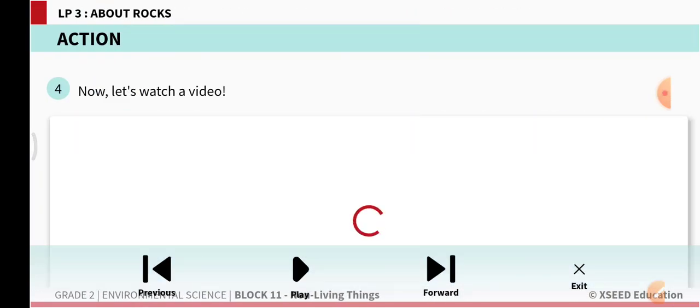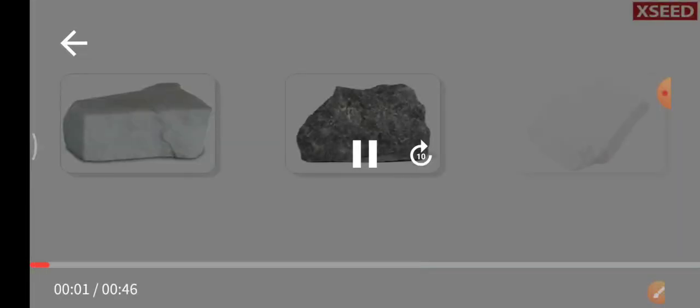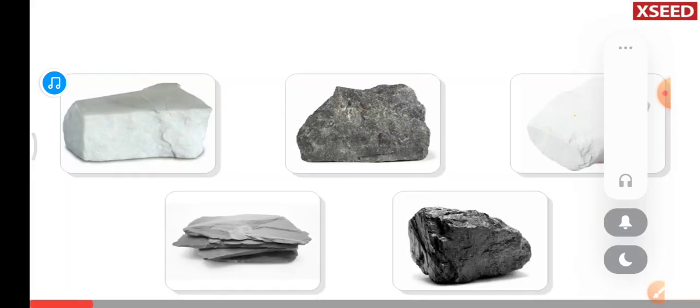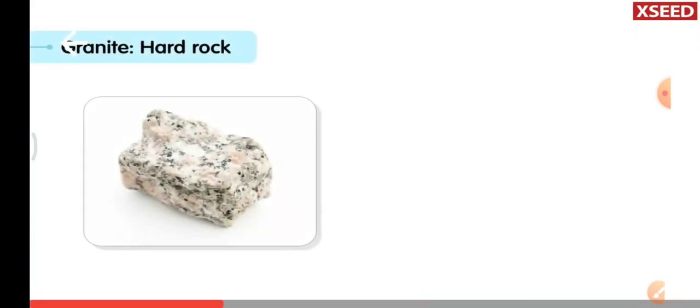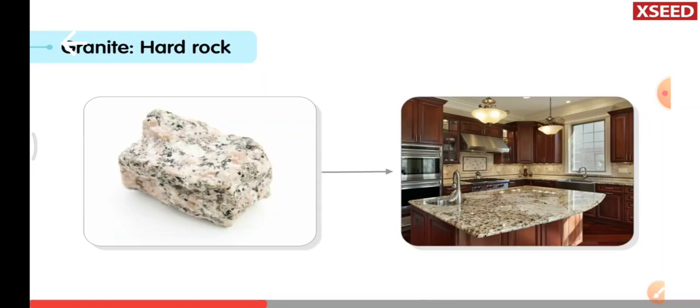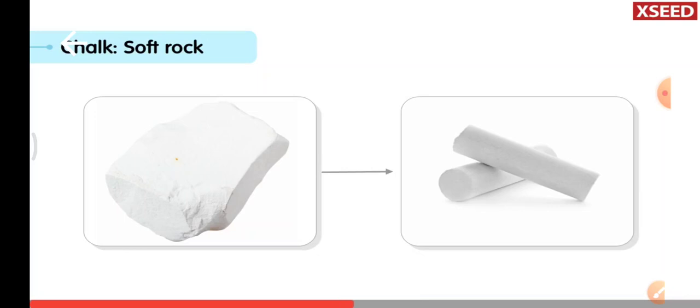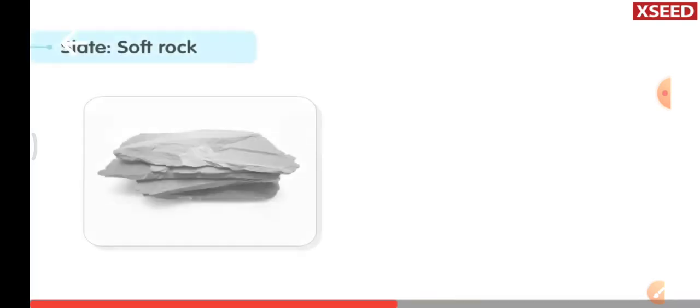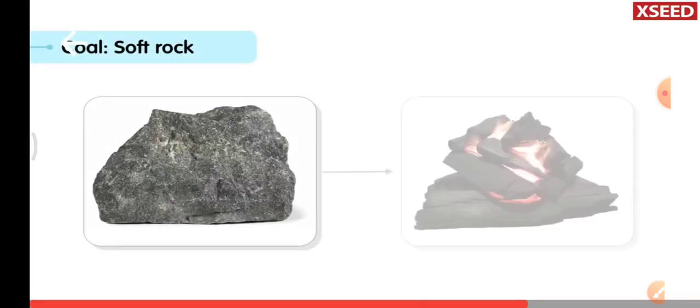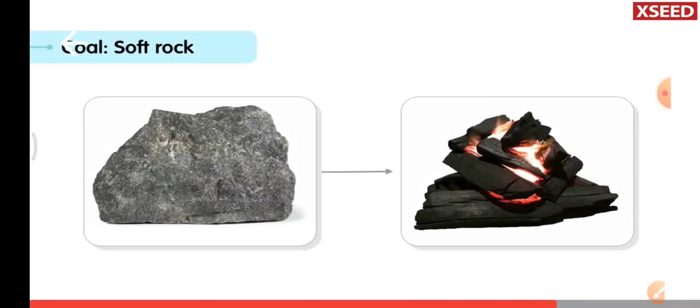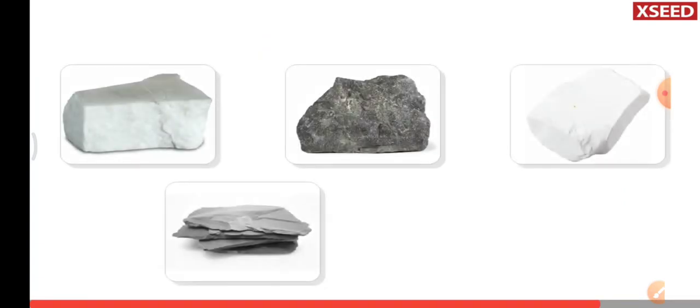Now let us watch this video. They are of different types and have different uses. Marble is used to make buildings. Granite is used to make kitchen slabs and tiles. Chalk is used to write on the blackboard. Slate is used to make blackboards or roofs of houses. Coal is used to produce heat. Rocks are used according to their features.